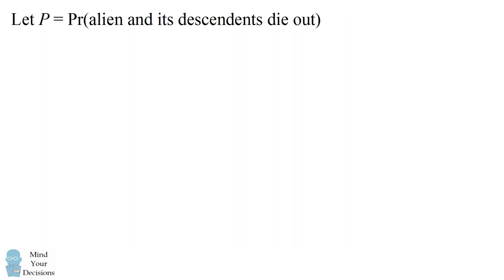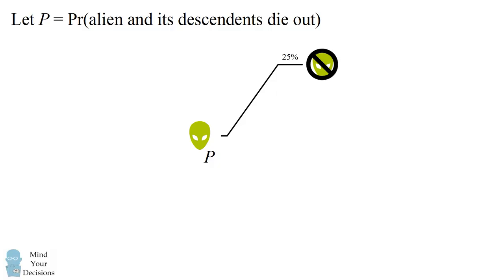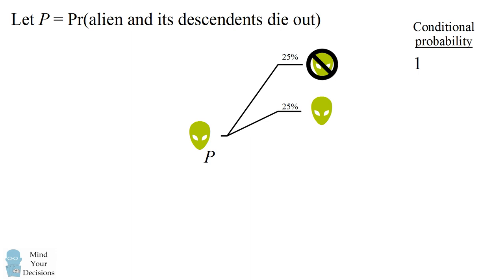Let's write P for the probability that an alien and all of its descendants die out. The next day, there are four equally likely events. There is a 25% chance the alien dies — the conditional probability that this alien and all of its descendants die out is then 1. There's another contingency where the alien does nothing; now the situation is exactly the same, so the probability is still P that this alien and all of its descendants will die out.